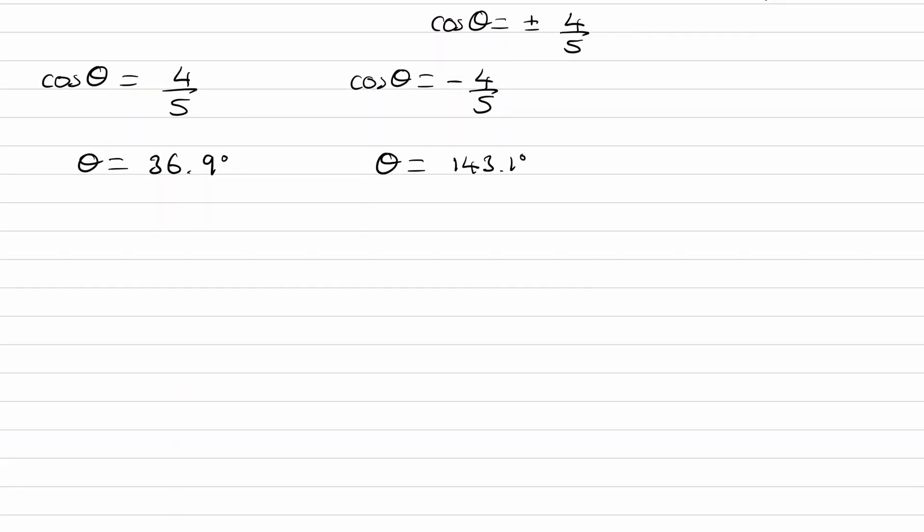To work out the length of this side, we can use the cosine rule. Let's just redraw this triangle. Here is our triangle. This side is side a that we're trying to work out. a squared is b squared plus c squared minus 2bc cos a.